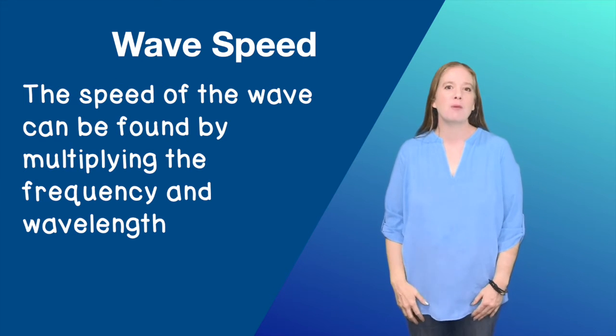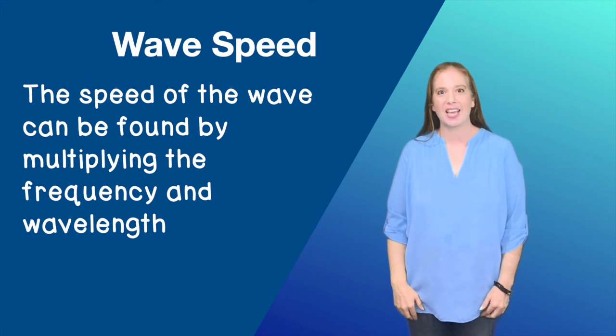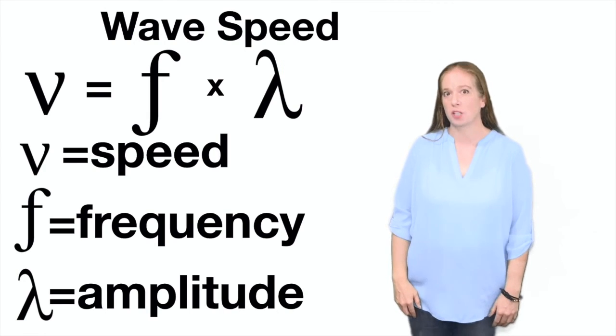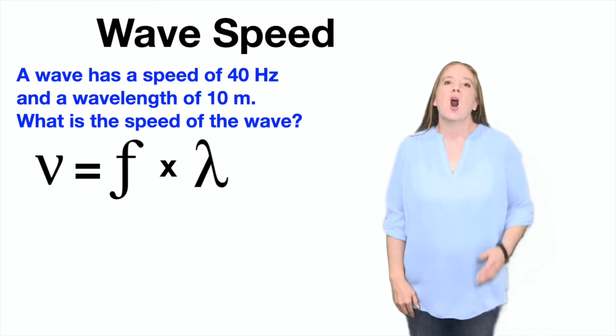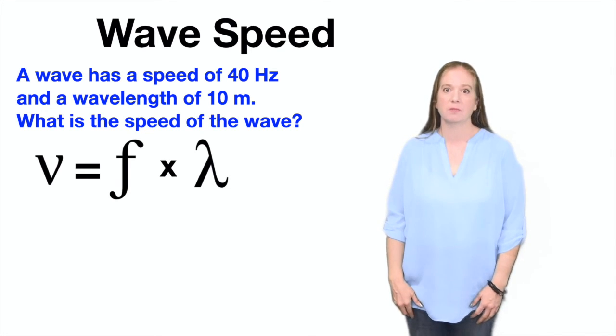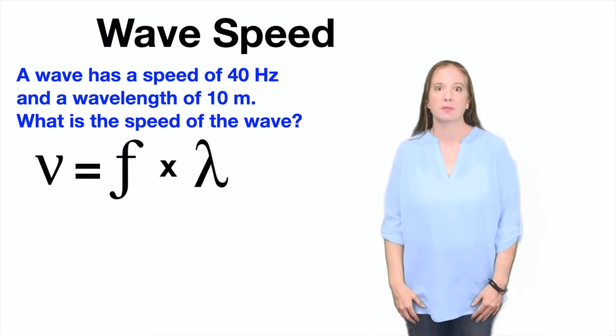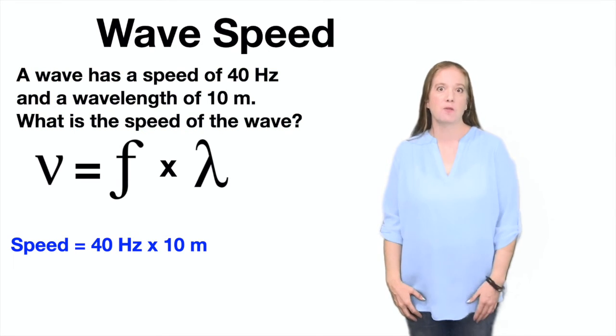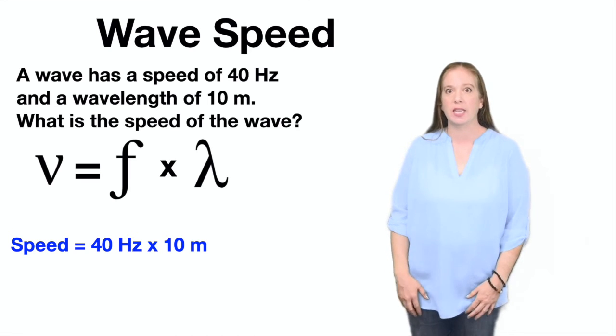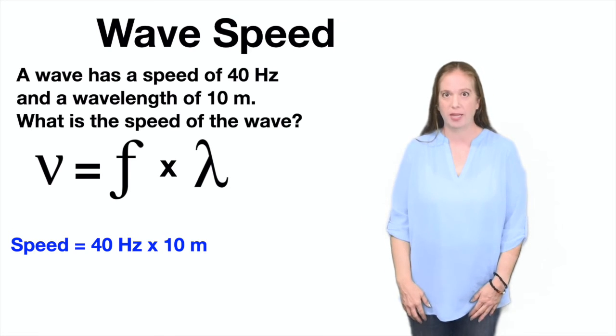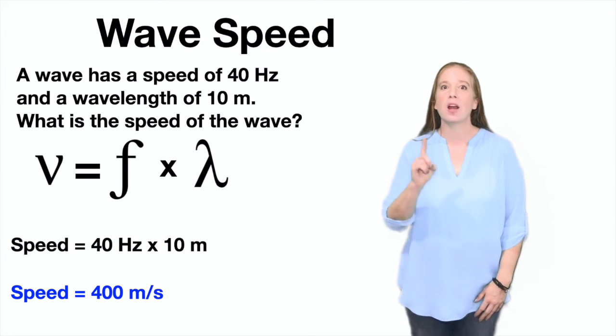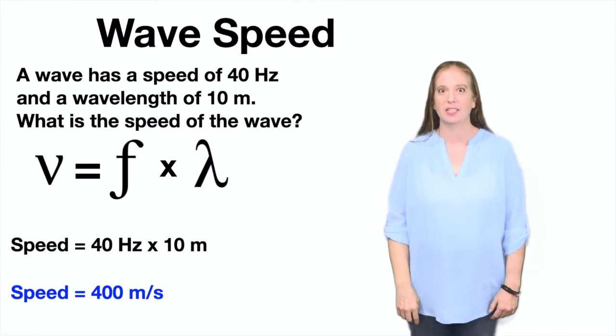The speed of the wave can be found by multiplying the frequency and wavelength. This is the formula for speed. A wave has a speed of 40 hertz and a wavelength of 10 meters. What's the speed of the wave? To do this, you plug it into the formula and you put 40 hertz for the frequency, 10 meters for the wavelength and multiply them, giving you a speed of 400 meters per second.